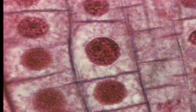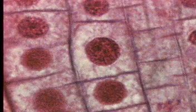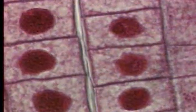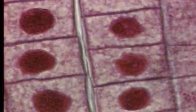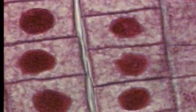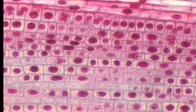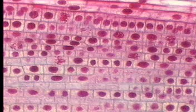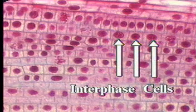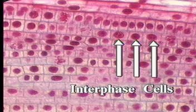Because the events that occur in interphase allow mitosis to take place, let us begin our examination of mitosis by taking a closer look at interphase cells. Interphase is defined as the period of a cell's life cycle between one mitosis and the next mitosis — the period of cell growth — as can be seen in this microscopic image of an onion root. Some cells are dividing, but the nuclei of most of the cells are round and intact. These are interphase cells.